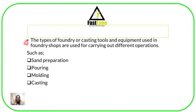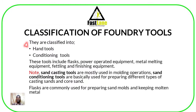Such operations may include sand preparation, powering, molding, as well as casting — and we use certain tools for each. These foundry tools are classified into two: we have hand tools and we have conditioning tools.